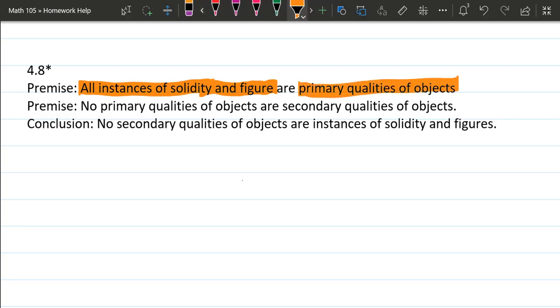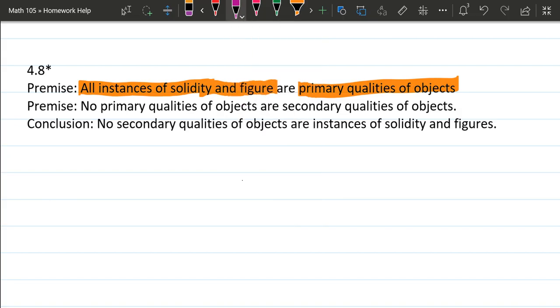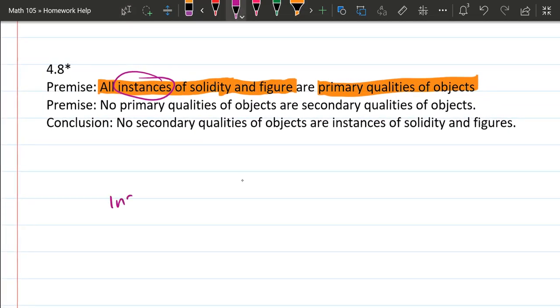So let's go ahead and diagram out what this means. It says all of them are. So I'm just going to shortcut this to instances right here instead of writing out all of this. So if we think of instances, all instances are primary qualities. I'm just going to shortcut this last one to be primary. So here's all of our instances. All of them are primary.